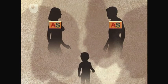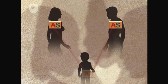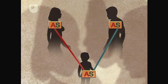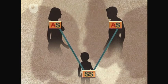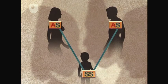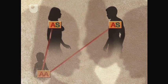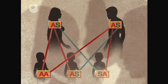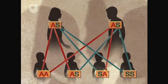If both parents of a child have sickle cell trait, AS, then they can have children with three possibilities. Statistically, this means that at each pregnancy there is a 25% chance of having a child with normal haemoglobin, a 50% chance of having a healthy child with sickle cell trait, and a 25% chance of having a child with sickle cell disease, SS.